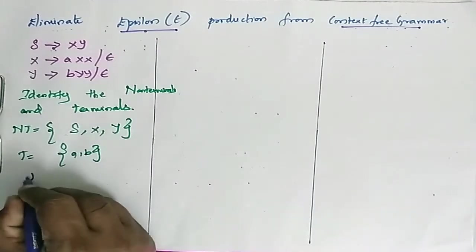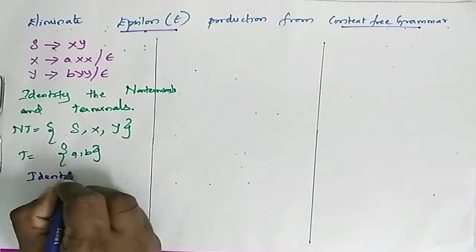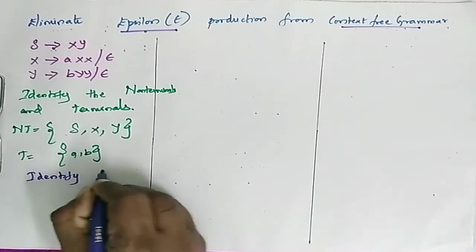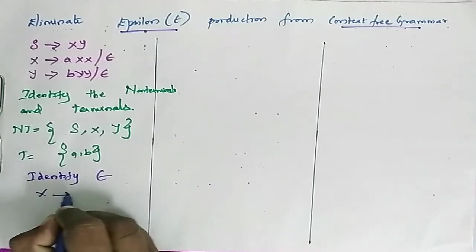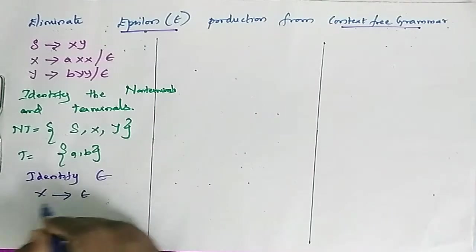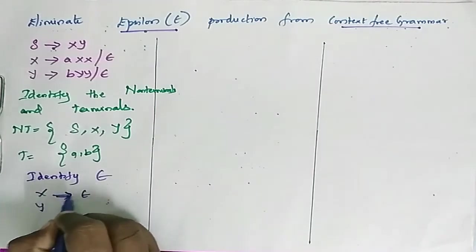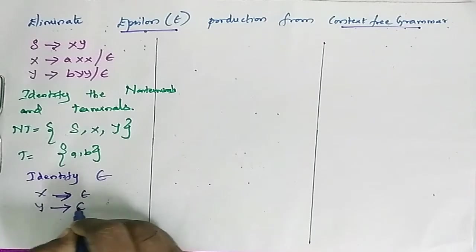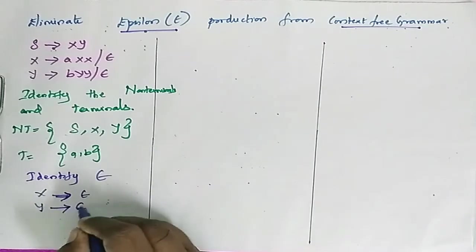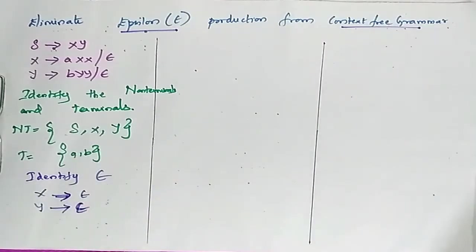Now identify epsilon productions. We have X determines epsilon, and Y determines epsilon. We need to remove them one by one.